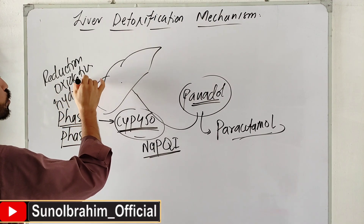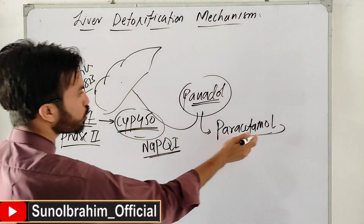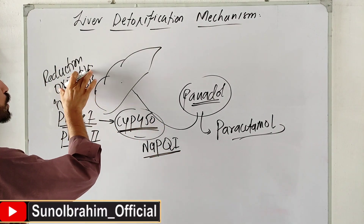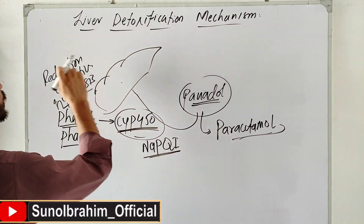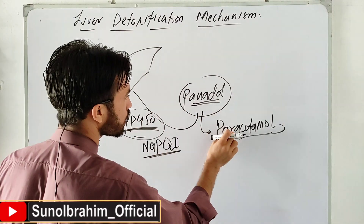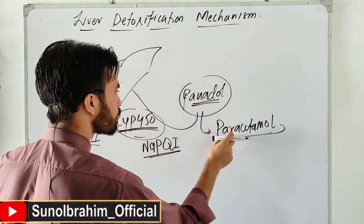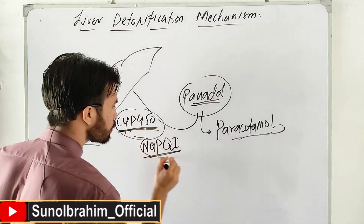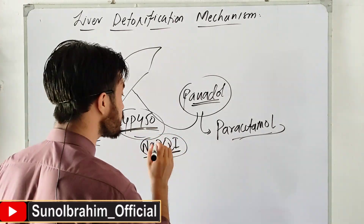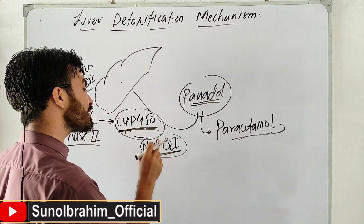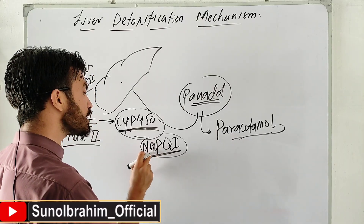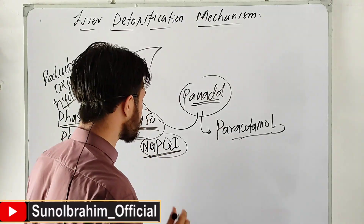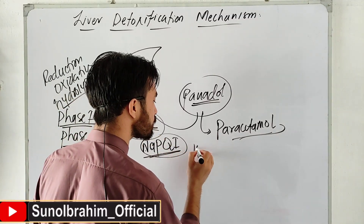The enzymes act on the Paracetamol molecule. Oxidation adds oxygen; reduction adds hydrogen and removes oxygen. When CYP450 enzymes act on Paracetamol in Phase One, they produce a dangerous toxic molecule called NAPQI - N-acetyl-P-benzoquinone imine - which is very harmful to the liver.